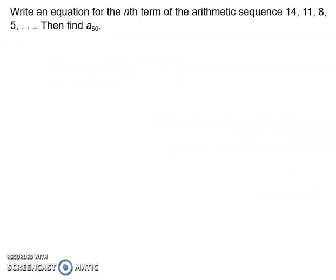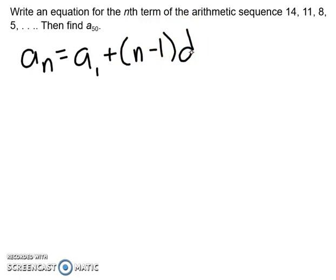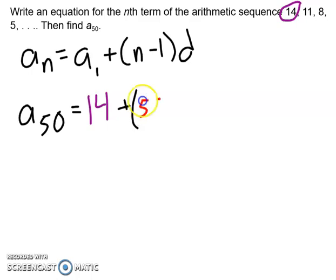It says, write an equation for the nth term of the arithmetic sequence, 14, 11, 8, 5, then find a_50, meaning you want to find the 50th term here. So the way that I do is I will always write out my formula and fill in what we know. Okay. So we want to find the 50th term. So it's going to be a_50 is equal to that first term, which is 14, plus, we're trying to find the 50th term, so it'll be 50 minus 1, times our difference. Well, from 14 to 11, to 8, to 5, I'm subtracting 3, so times negative 3.